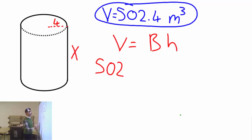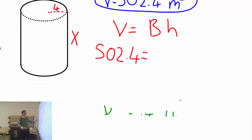So volume in this case 502.4 equals B. We don't know the base area so let's calculate it on the side.